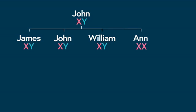John Senior also has a daughter, Anne, who does not carry the Y chromosome because females have two X chromosomes.